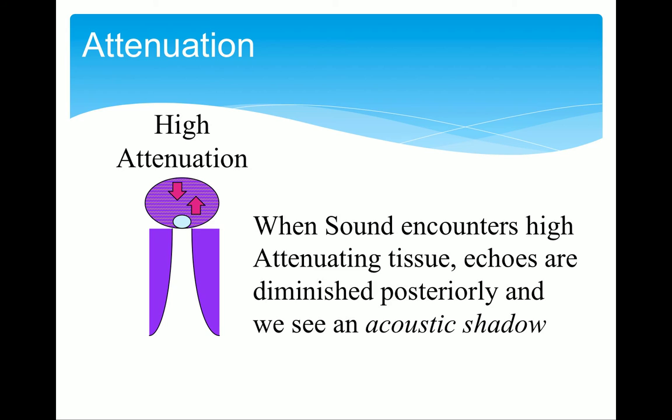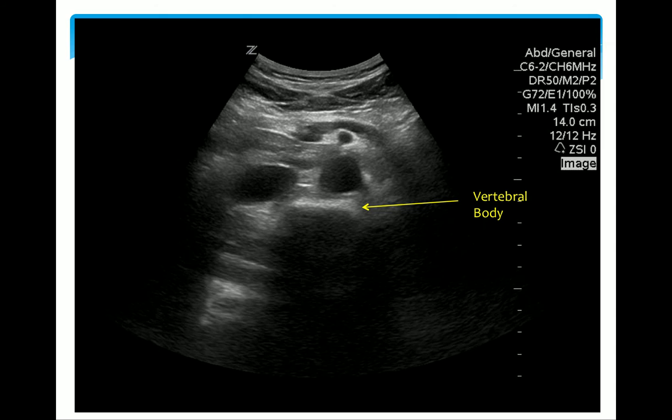Now if the tissue is particularly dense or high-attenuating, the ultrasound wave will not be able to penetrate it. Therefore the machine will get no echoes from deeper tissue. We'll get something called an acoustic shadow behind the dense structure. The classic example of this is bone.